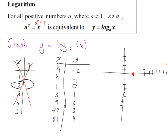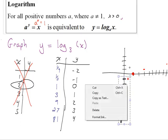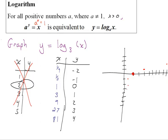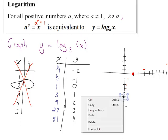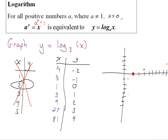When x is one third, the output is negative 1. When x is one ninth, the output is negative 2. Continuing the pattern: 1/27 gives negative 3, and 1/81 gives negative 4. We see asymptotic behavior — as x approaches 0, the function goes down and gets more and more negative.